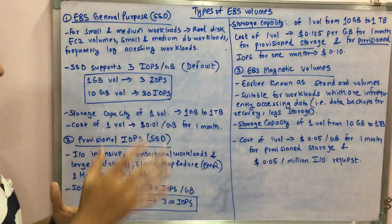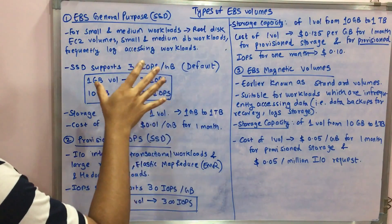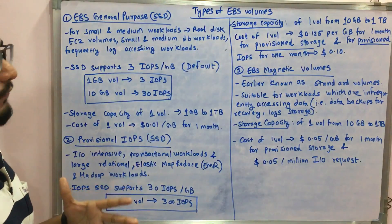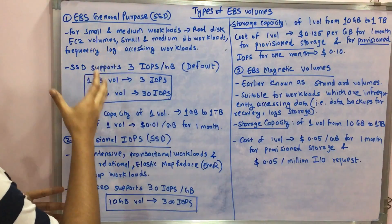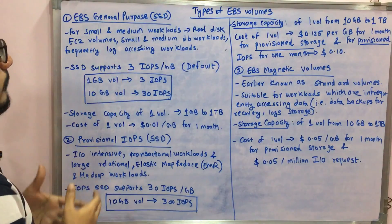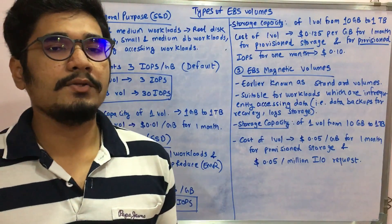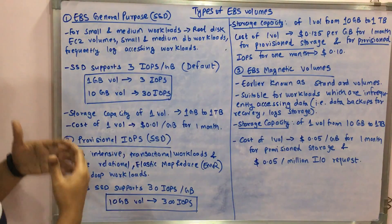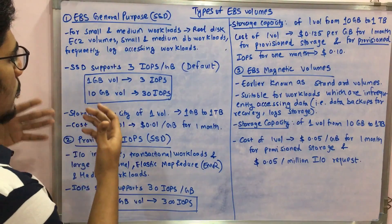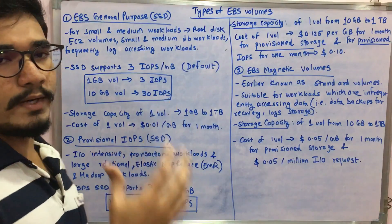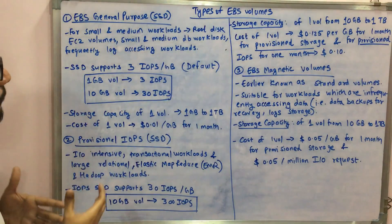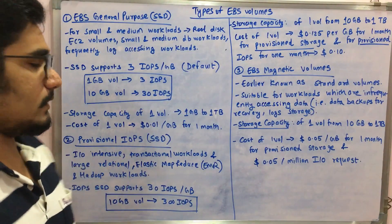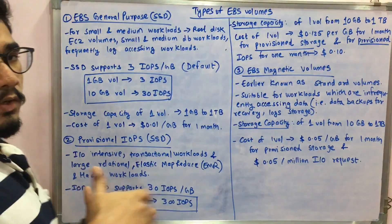SSD supports a default of 3 IOPS (input/output operations per second) per GB. So 1 GB of volume gives you 3 IOPS, and 10 GB gives you 30 IOPS — it's directly proportional. As you increase the size, you get that many more IOPS. The storage capacity for General Purpose is 1 GB to 1 TB per volume, and the cost is approximately $0.01 per GB per month.